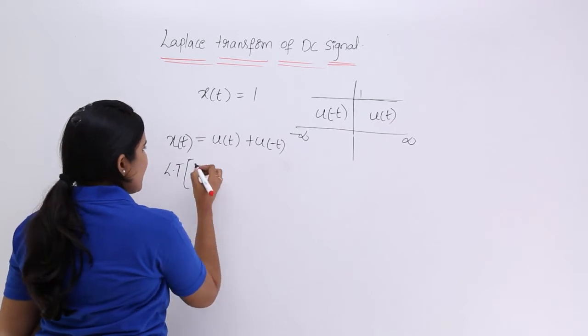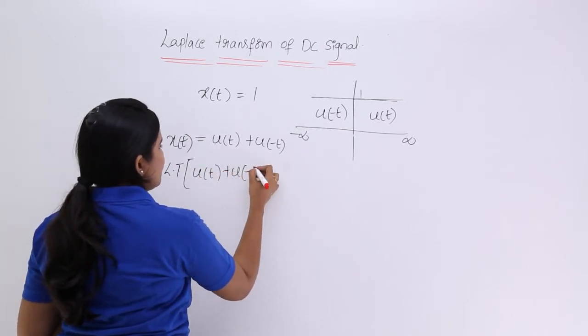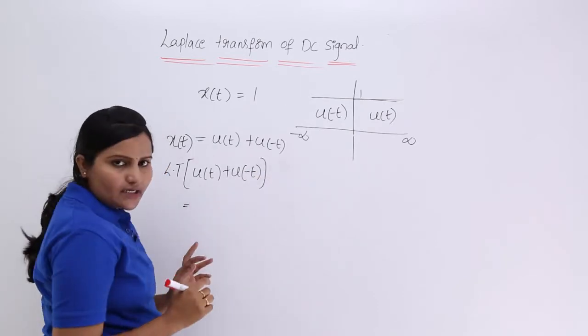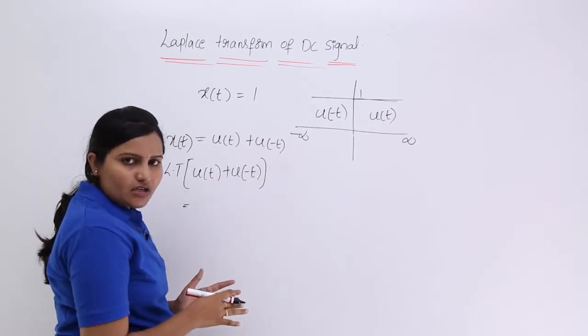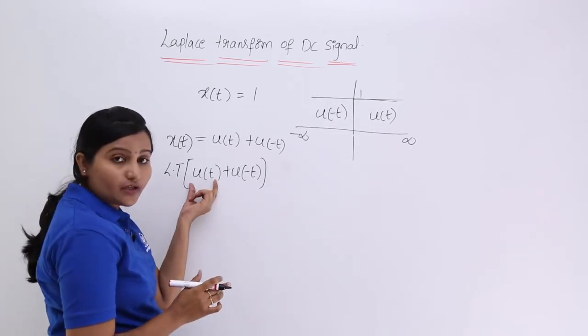So now we need to consider Laplace transform of this DC means u of T plus u of minus T. So you can take individual transforms. When we are discussing integration and differentiation properties we solved for u of T.